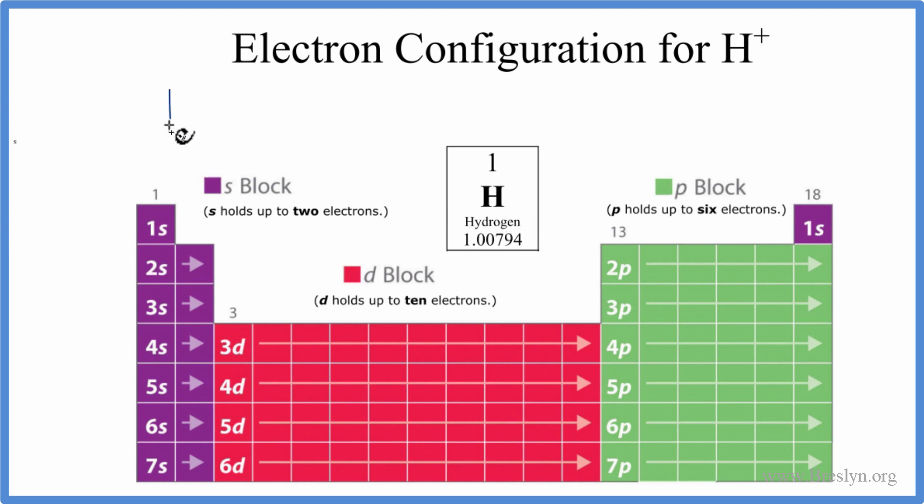So for hydrogen, to write the electron configuration, we start with 1s, and s can hold up to two electrons. But we only have one, so we'll just put the one in there, and that's the electron configuration for hydrogen, 1s1.